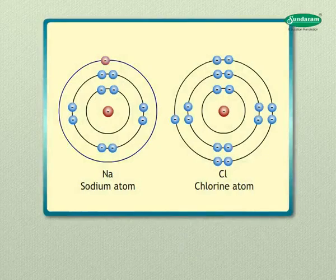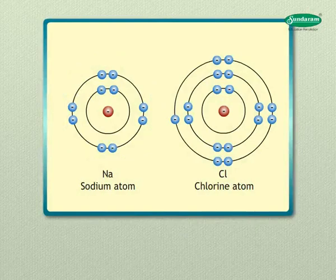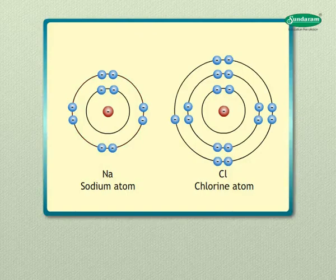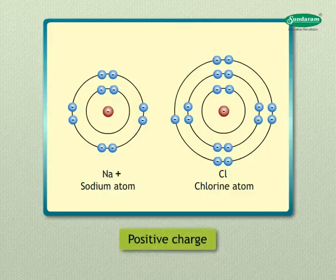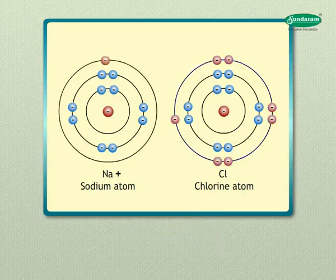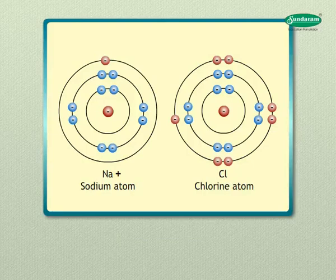Sodium has one electron in its outermost shell. If it loses one electron from its M shell, the L shell becomes the outermost shell with a stable octet. The nucleus still has 11 protons but the number of electrons becomes 10, giving a net positive charge — forming sodium cation Na⁺. Chlorine has seven electrons in its outermost shell and requires one more electron to complete its octet.